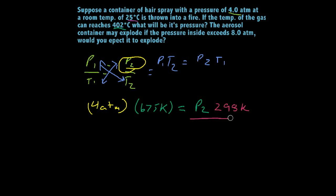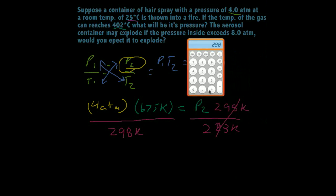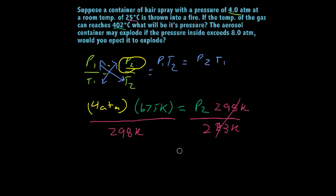So all we do now is divide both sides by 298, that's a 9 right there, cancels out, and we're left with 298 degrees Kelvin equals our P2. So all we do is grab our calculator again and solve for P2. I'll move this out of the way for you so you can see what I'm doing. 4 atm times 675 divided by 298, that equals 9.06. So P2 is 9.06.